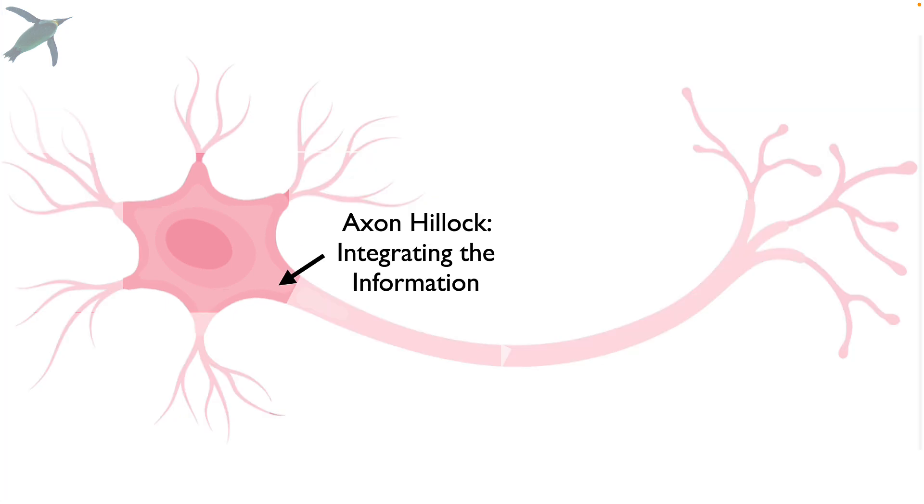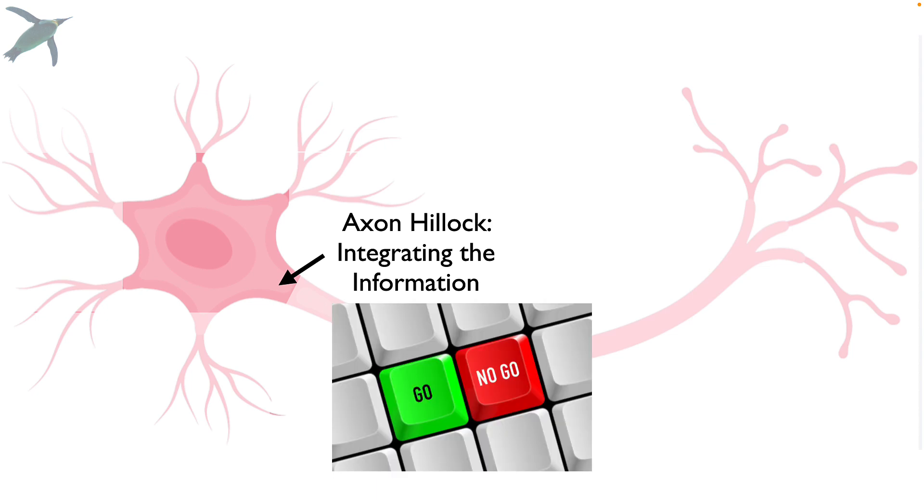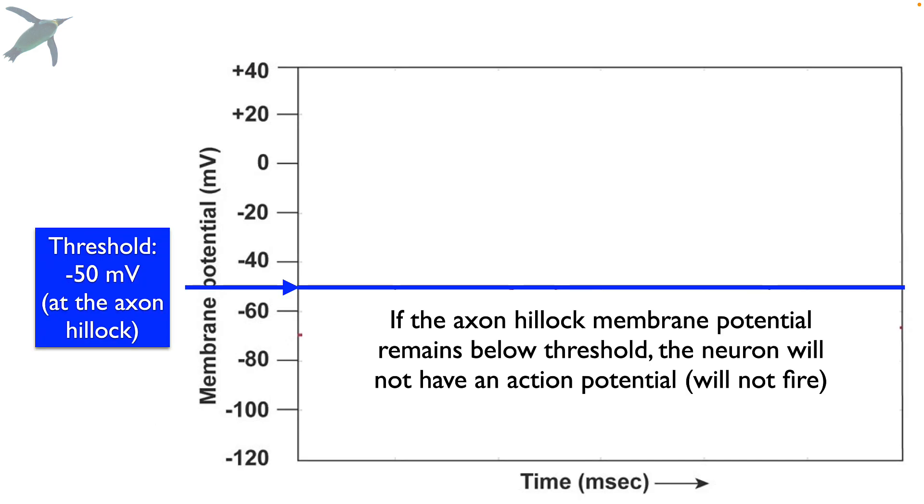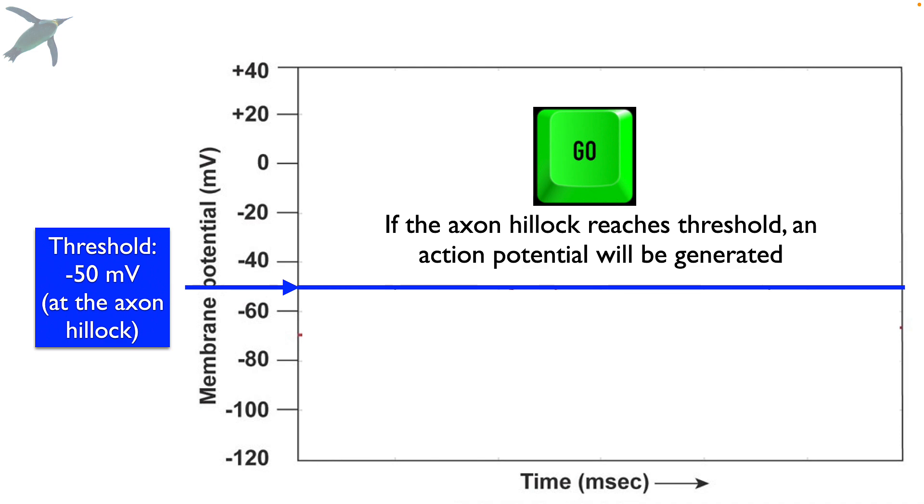Now, the axon hillock is the integrator. And this is where the neuron function becomes more like a computer, meaning it's zero or one. If the axon hillock potential remains below threshold, the neuron will not have an action potential. It will not fire. It will just sit there. On the other hand, if threshold voltage is reached, for most neurons that's around minus 55 to minus 50 millivolts, an action potential will be generated.